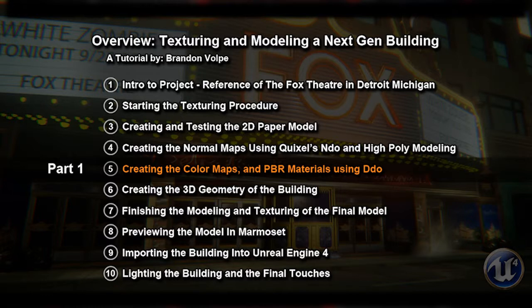This is the fifth part of the process. I'll be creating the color maps and physically based rendering materials using DDo. We're just going to create a few of the maps and textures and test it out. Then we'll be moving on to the next step to create the low-poly geometry. Let's get started on those materials.